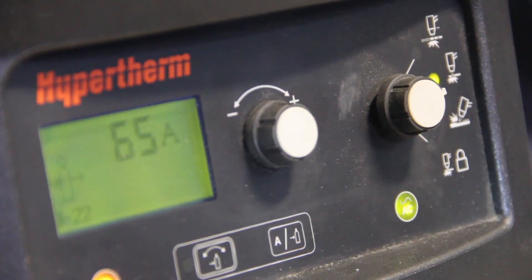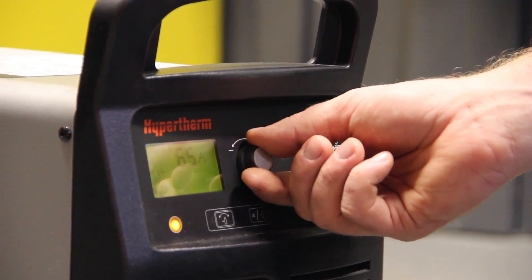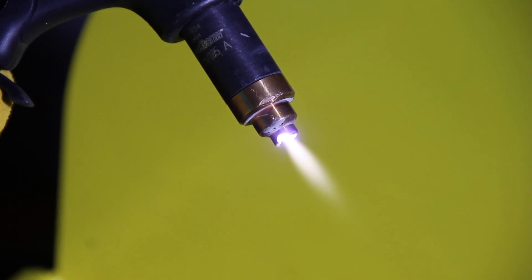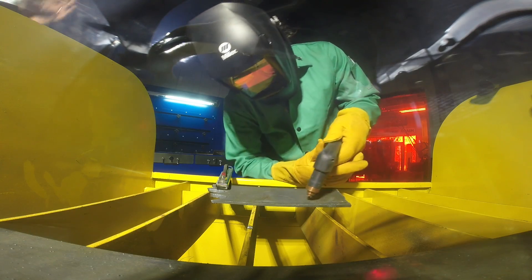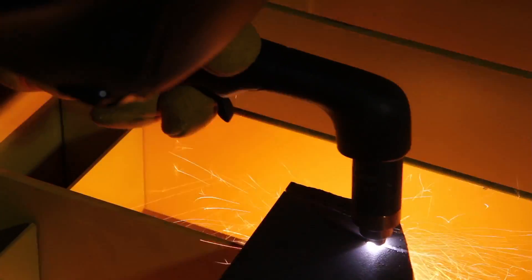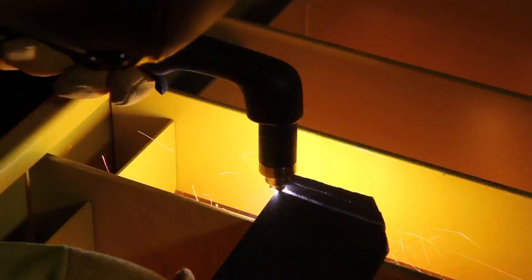With features like Smart Sense Technology to automatically adjust the gas pressure for ease of use, as well as the seven Duramax torch styles which include both the 15 degree and 75 degree hand torches which provide greater versatility and enable operators to select the right tool for the job.